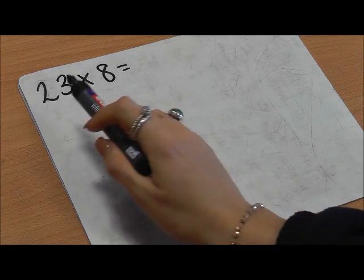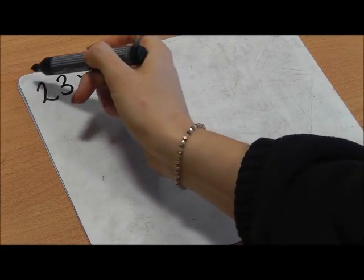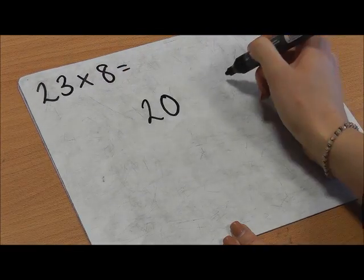The calculation is 23 times 8. I'm going to partition my 2 digit number into 20 and 3.